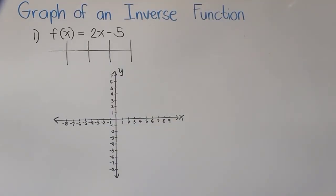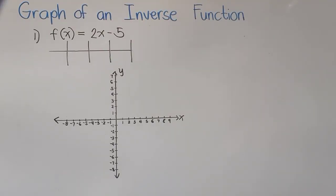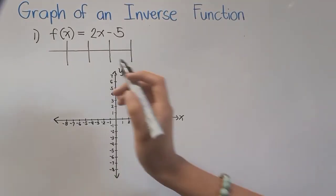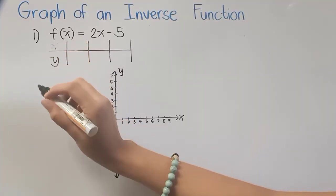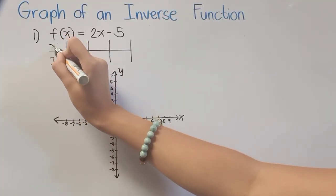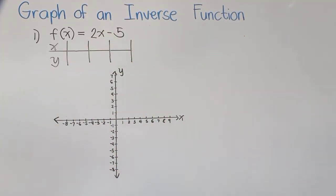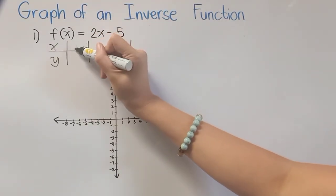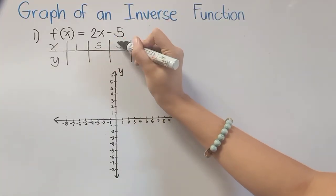Now we have here the function f(x) = 2x - 5. First thing that we have to do here is to graph this given function in order for us to get the graph of our inverse function. So we have here any values of x. It's up to you what values you wanted to consider as long as you can easily graph it. Mine is 1, 3, and 5.